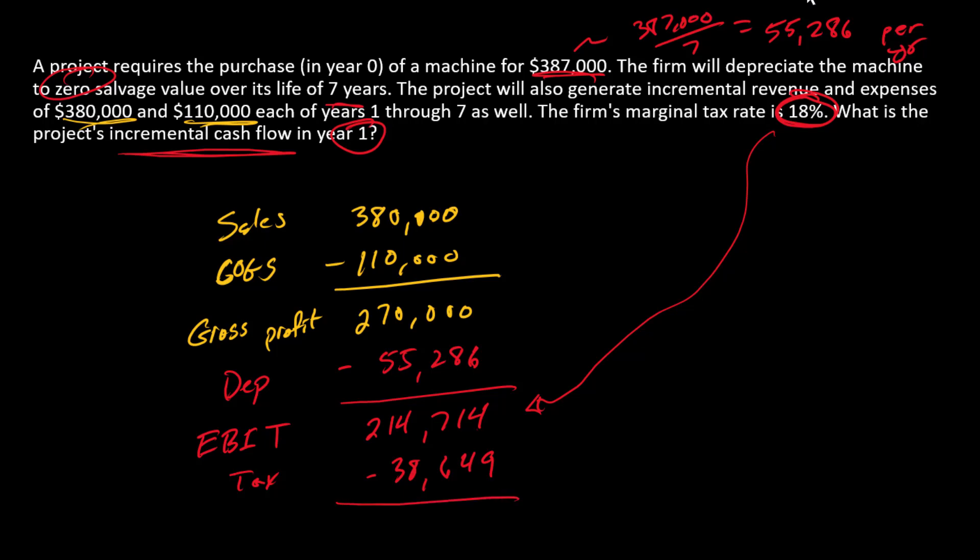And so here we have incremental earnings, $176,065. So almost done.